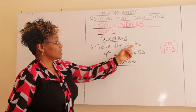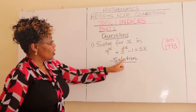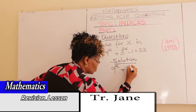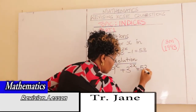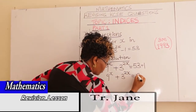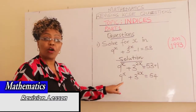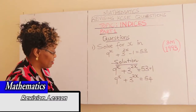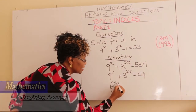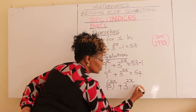Number one: solve for x in this equation. It carried three marks in 1993. For the solution, you first take the constant to the other side, so 9 raised to x plus 3 raised to 2x equals 54. Now express these two terms using a common base — base 3. So 9 is the same as 3 squared, raised to x, plus 3 raised to 2x, which equals 54.